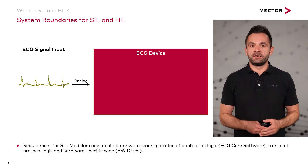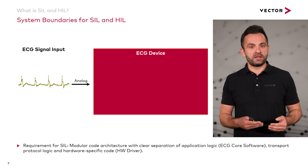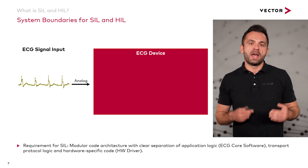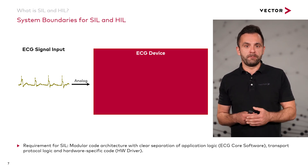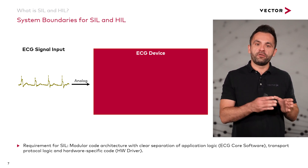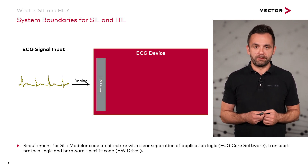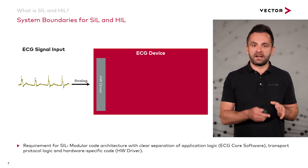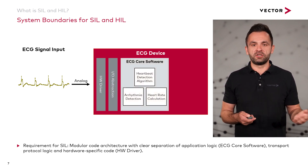Let's take a closer look at the internal software architecture to understand which software components are tested with SIL and which with HIL. The analog ECG sensor data is processed by an analog-to-digital converter which writes integer values to a register to represent the time series of the measured input. This register is read out by hardware and platform dependent software — here called the hardware driver. This hardware driver passes the time series through an I/O abstraction layer to the main part of the device's software: the ECG core software.